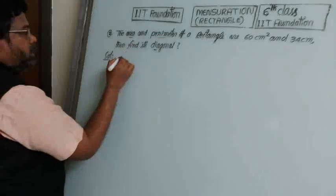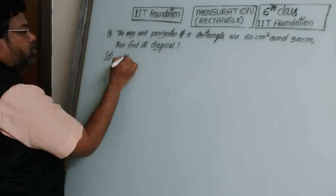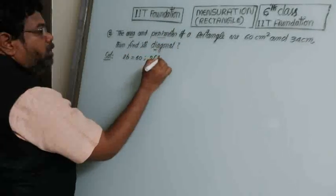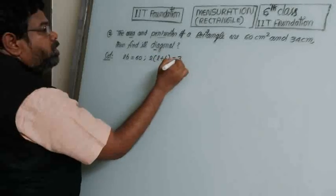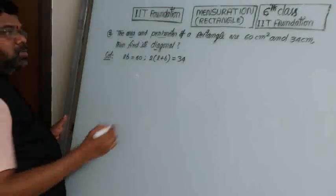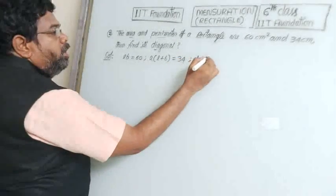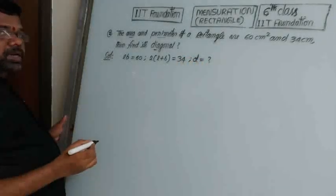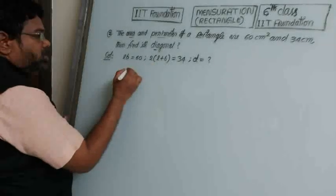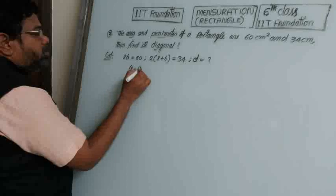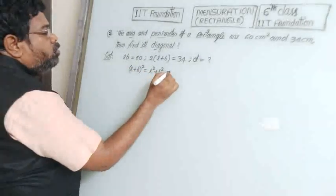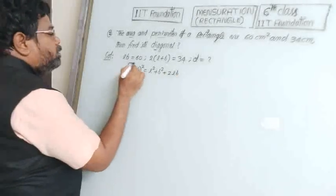Area means L into B equals 60. Perimeter means 2 into (L plus B) equals 34, so L plus B equals 17. We require diagonal D. We know D² equals L² plus B². We use the identity: (L plus B)² equals L² plus B² plus 2LB.